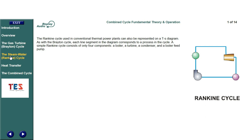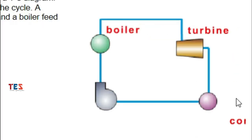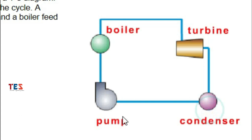The Rankine cycle used in conventional thermal power plants can also be represented on a TS diagram. As with the Brayton cycle, each line segment in the diagram corresponds to a process in the cycle. A simple Rankine cycle consists of only four components: a boiler, a turbine, a condenser, and a boiler feed pump.